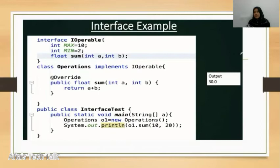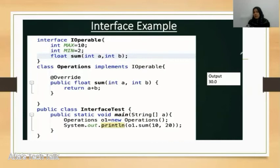The operations will be added to the implementing class. I will implement the interface. There is a float method that returns values. The float is passed by A and B. In a public class, an object is created, and we call the interface method passing the values. Then the output is: sum of 10 and 20.